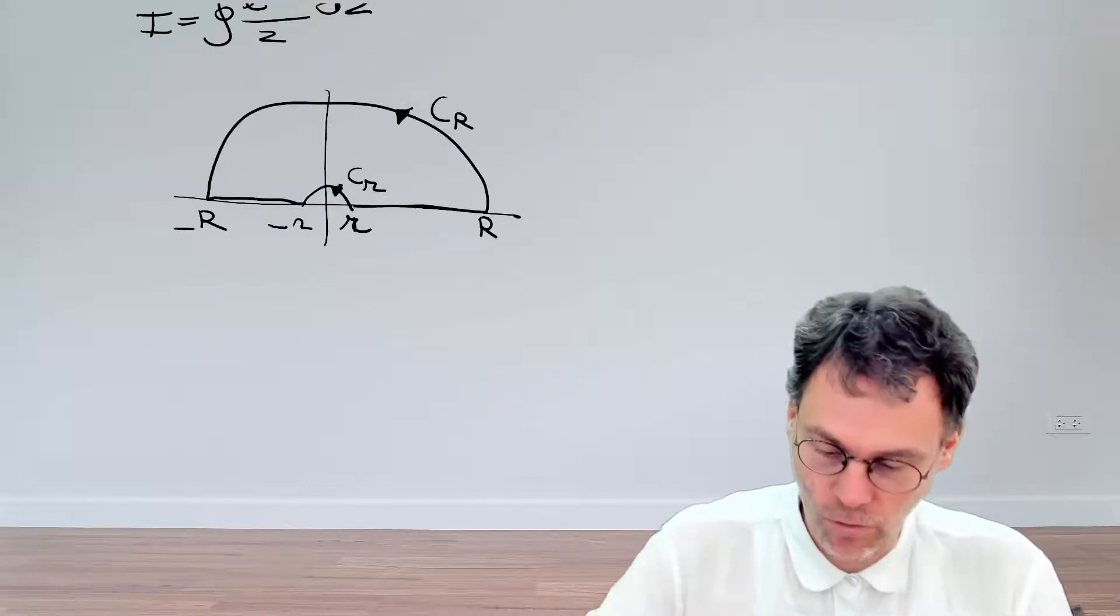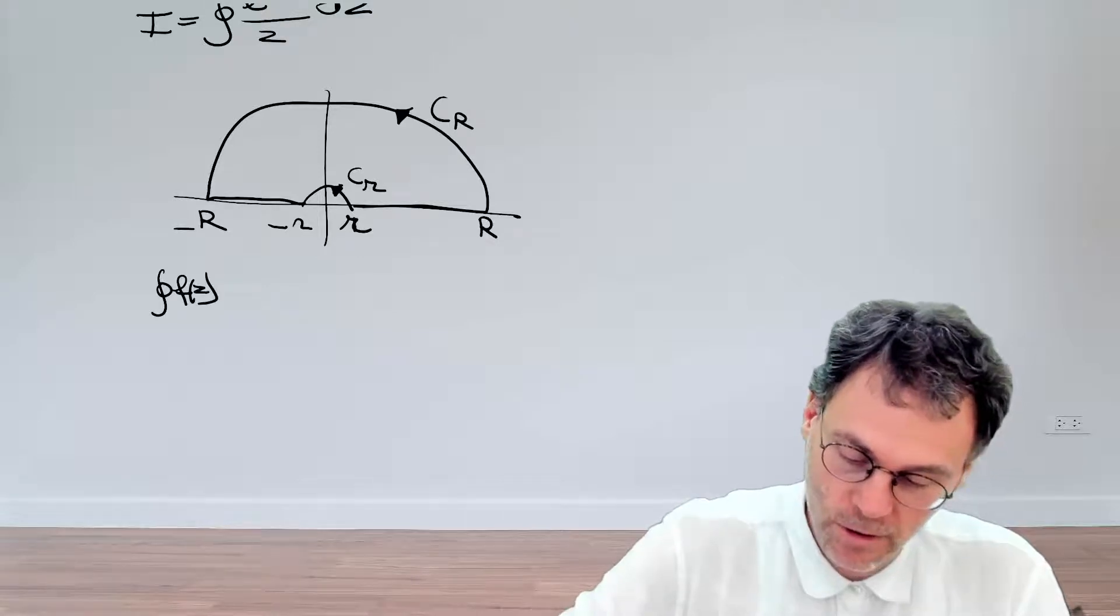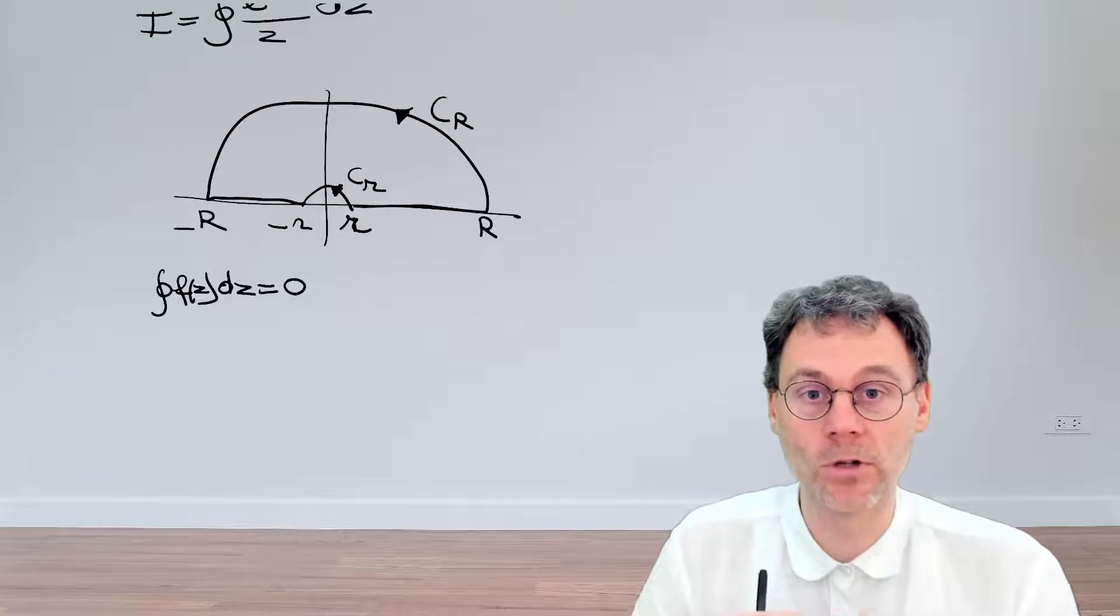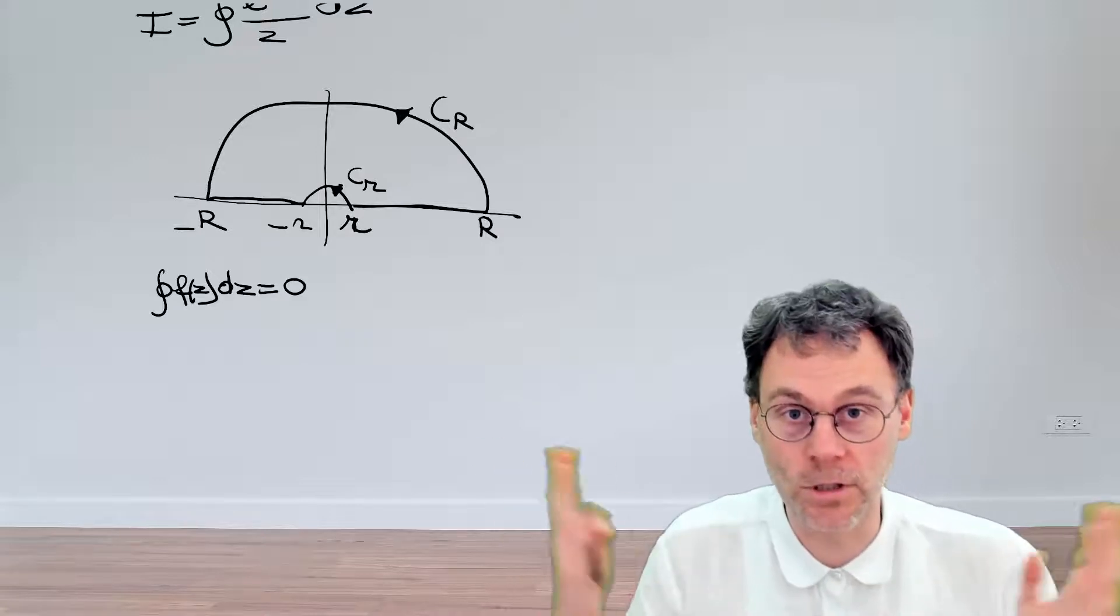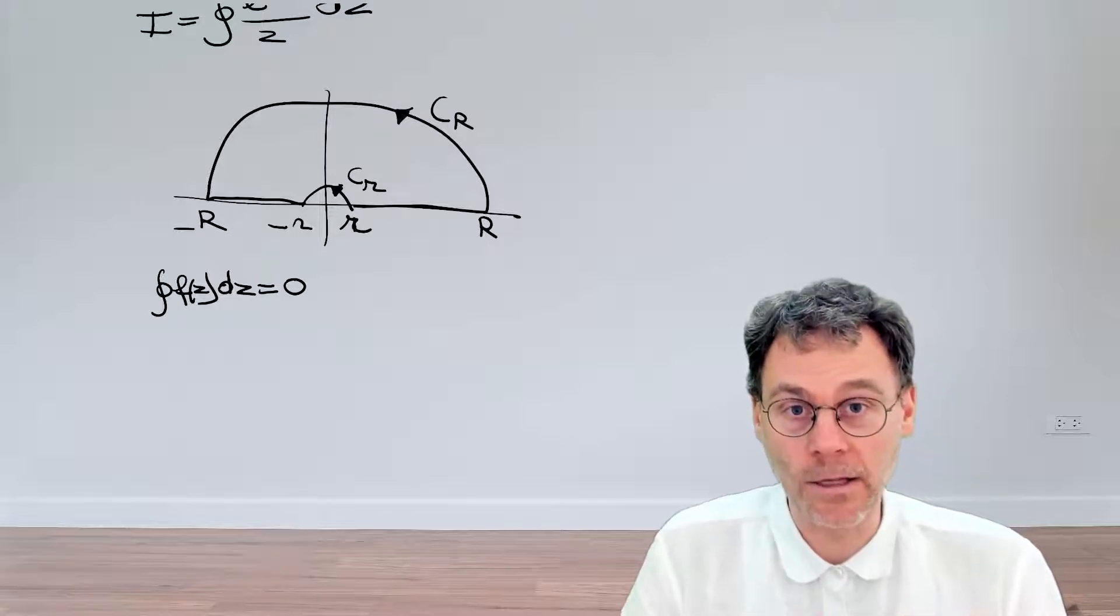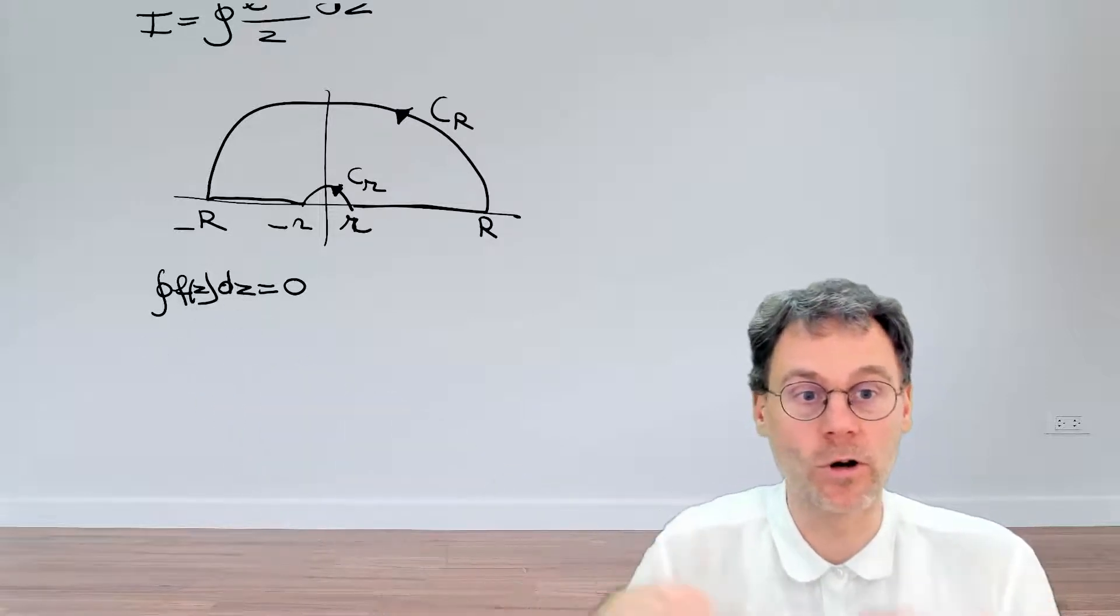Okay, let's do residue calculus, which is in this case quite trivial because there's no singularities inside the contour. So the end result is zero, which is just the same, of course, as Cauchy's theorem. And in the next step, what we need to do is calculate the different contributions of our contour.